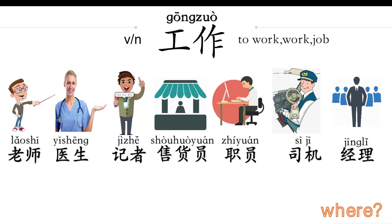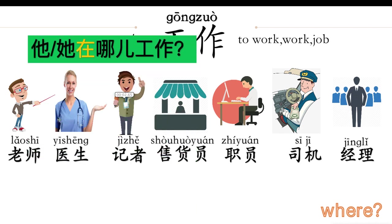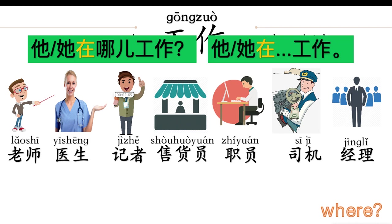Now if we want to ask where does she or he work, how to ask 'where'? We have learned: where is 哪儿. So we could ask: 她在哪儿工作? Where does she work? How to answer? 她在... plus the place plus 工作.